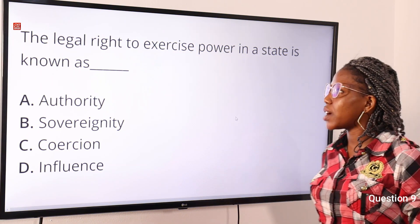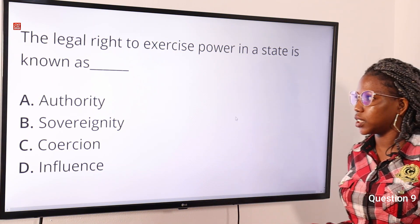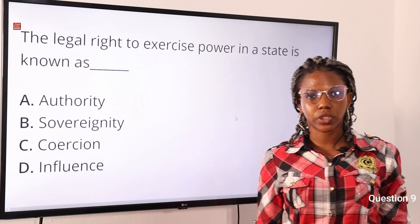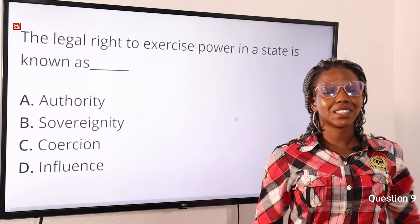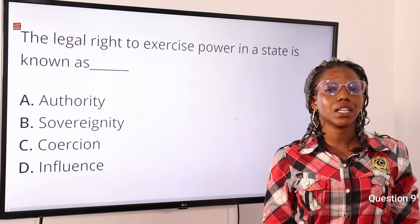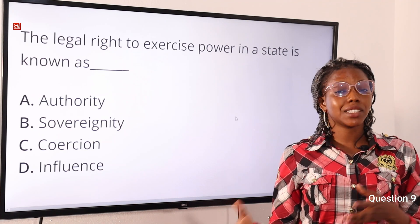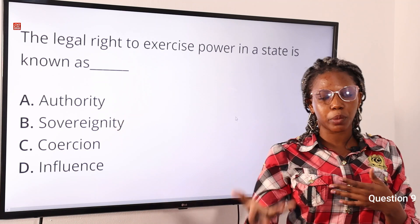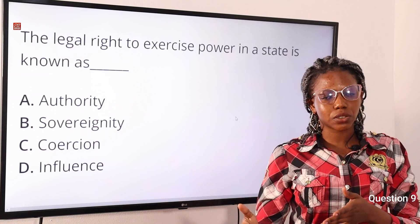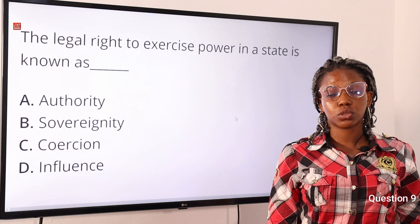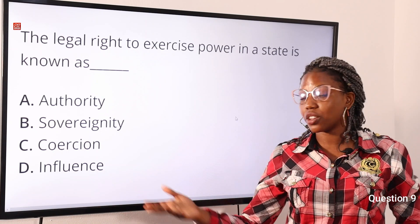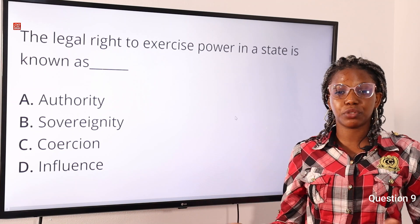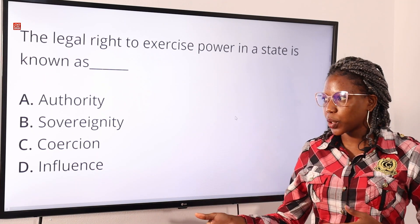Question nine: the legal right to exercise power in a state is known as — option A: authority, option B: sovereignty, option C: coercion, option D: influence. The answer is option A, authority — the legal right to exercise power and compel obedience, entailing legitimate rights. Sovereignty is the supreme authority; coercion is the use of threats or force to compel obedience; influence is a way of creating an effect on someone's behavior or character.